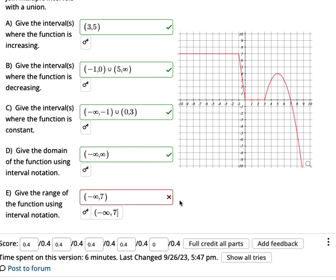Hey, Dan. It looks like you have everything but the range. So it does go from negative infinity to 7.